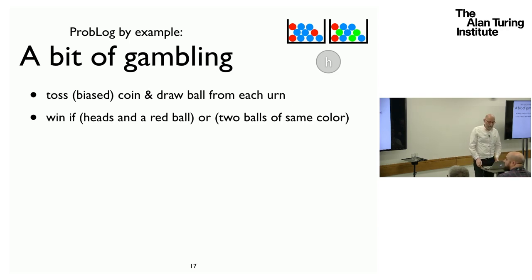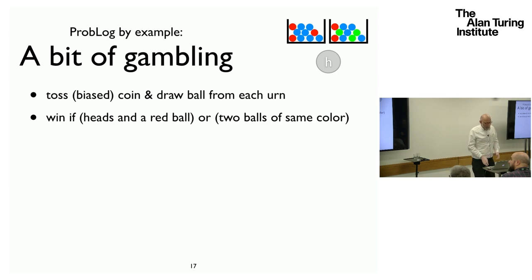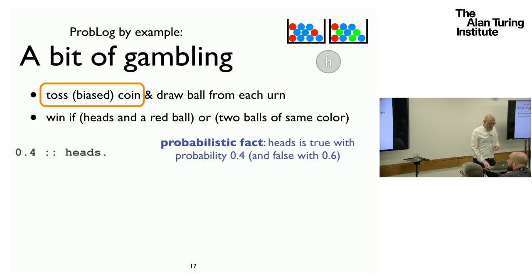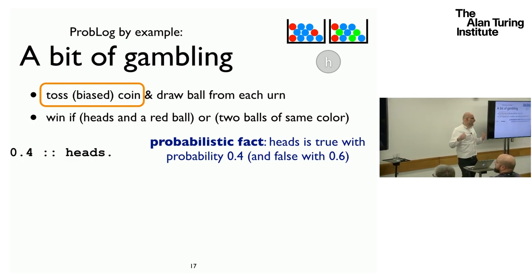Let me illustrate this on a simple example about playing a game. There are two urns, each containing coloured balls, and there is also a coin. You toss the biased coin and draw a ball from each urn. You win if the coin comes up heads and there is a red ball, or if you draw two balls of the same colour. The first random variable is the fact 'heads' — it's a biased coin that comes up heads with probability 40%, and with probability 60% heads is false. These random variables are turned into probabilistic facts.